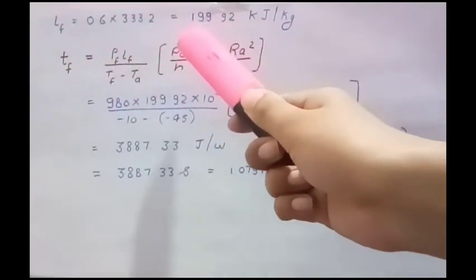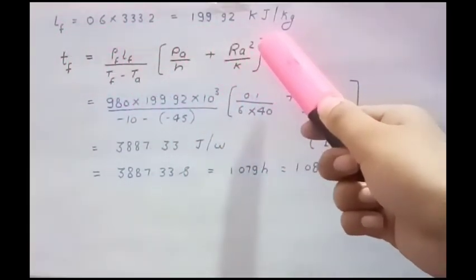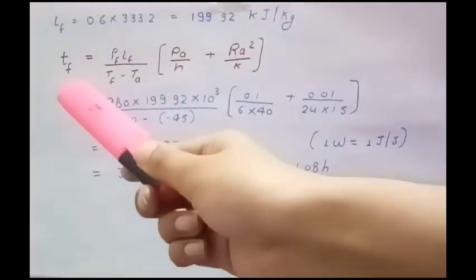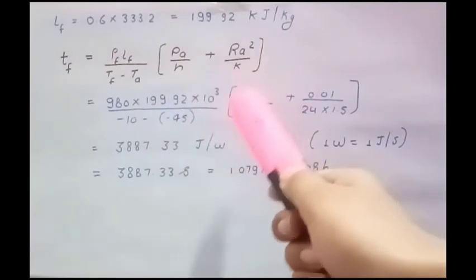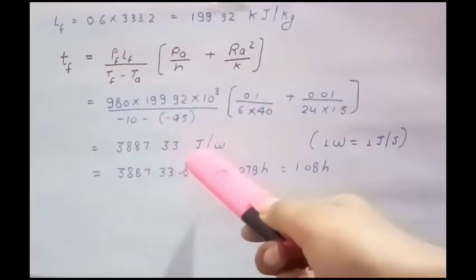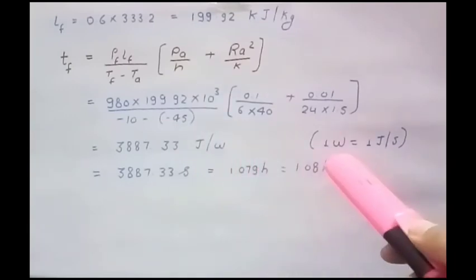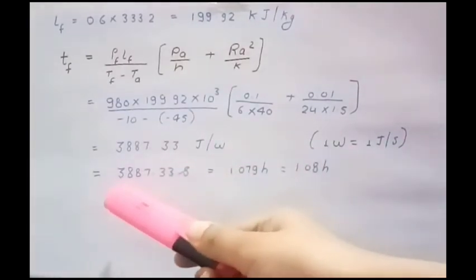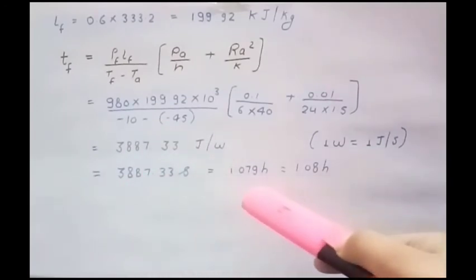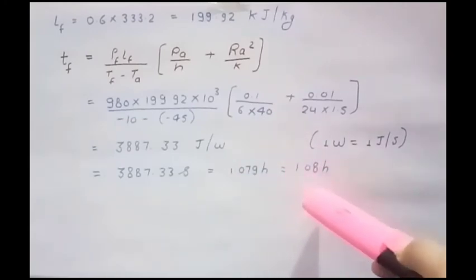After putting the value in Planck's equation we get 3887.33 joule per watt. As we all know one watt is one joule per second, so the answer is 3887.33 seconds. After converting the seconds into hours we get 1.079 hours or 1.08 hours. This is the correct answer for this question.